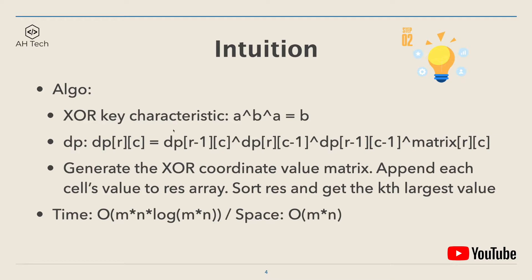With this characteristic, we can use dynamic programming to solve this question. The DP transition equation is: dp[r][c] (the coordinate value of the matrix) equals dp[r-1][c] XOR dp[r][c-1] XOR dp[r-1][c-1] and then finally XOR the cell value matrix[r][c].